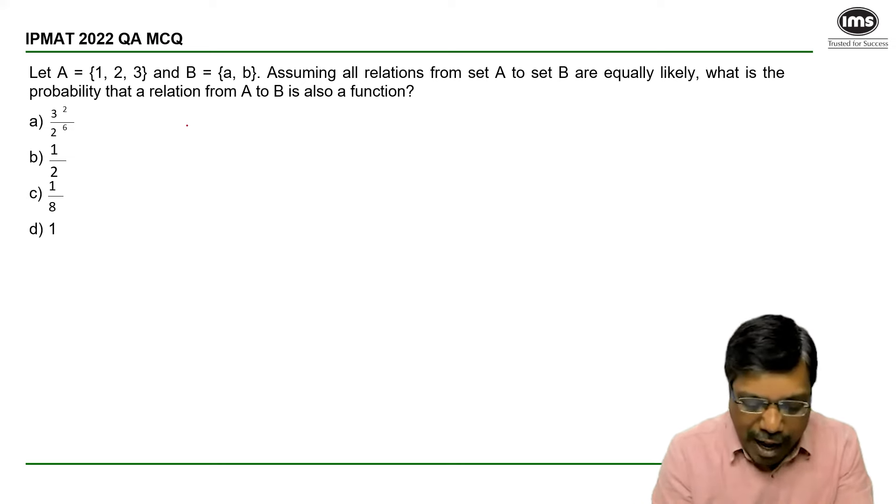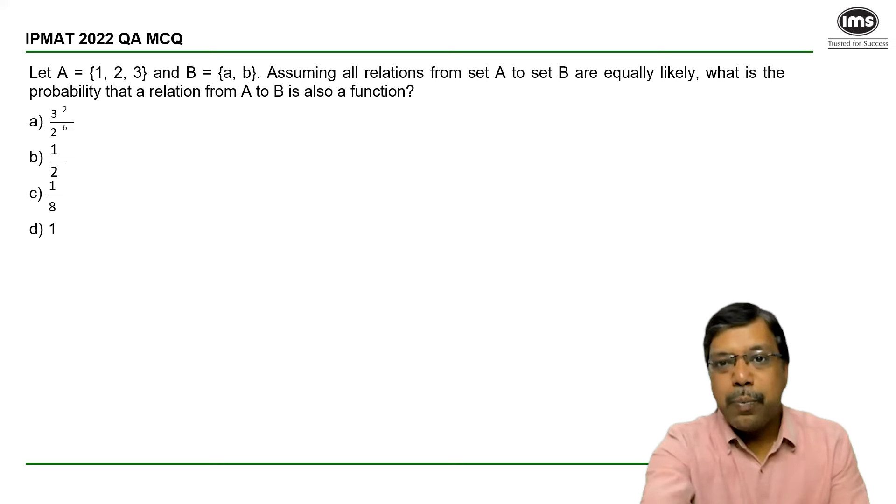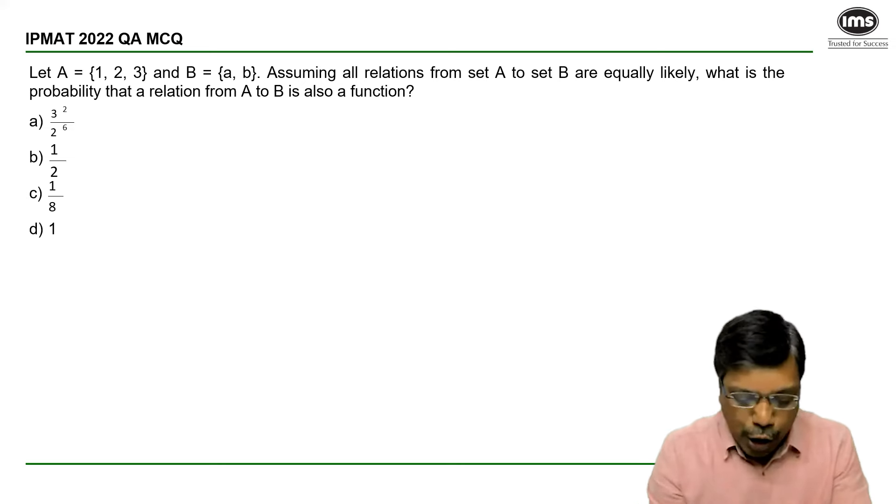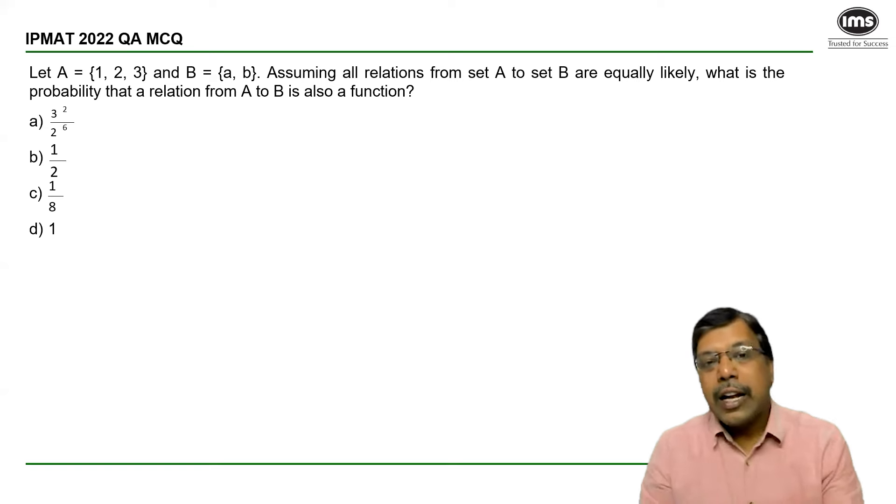Now I have a set A with three elements and a set B with two elements. Assuming that all relations from A to B are equally likely, we need to find the probability of a relation to be a function from A to B.